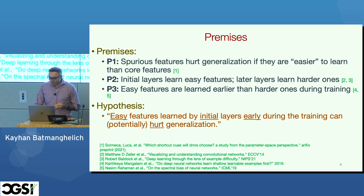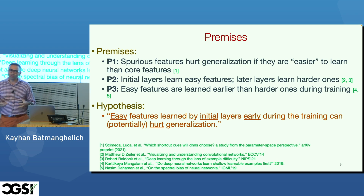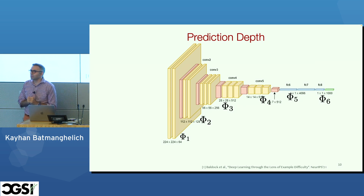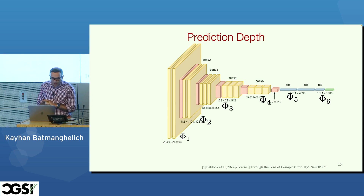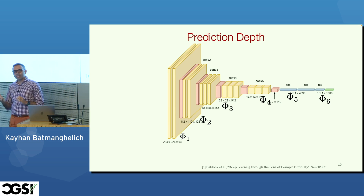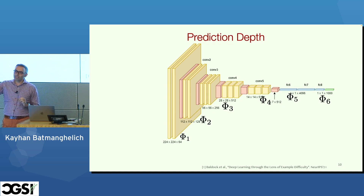Because we focus on the notion of easy versus difficult, we need to identify what easy versus difficult means. We adopt a notion called prediction depth, proposed in 2021. The high-level idea of prediction depth is: what is the earliest layer in a neural network at which the model makes a decision and after that does not change its mind?